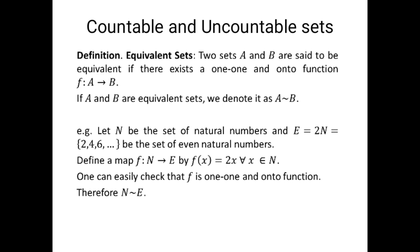Two sets A and B are said to be equivalent if they have the same cardinality, or we can say if they have the same number of elements. Mathematically, two sets A and B are said to be equivalent if there exists a one-to-one and onto function f from A to B. If A and B are equivalent sets then we denote it as A is equivalent to B.